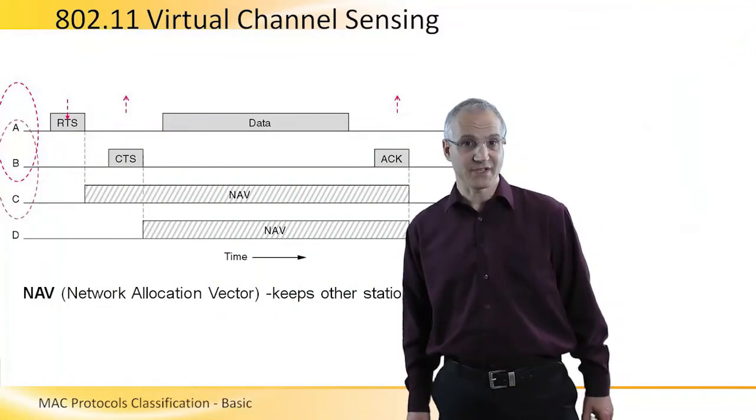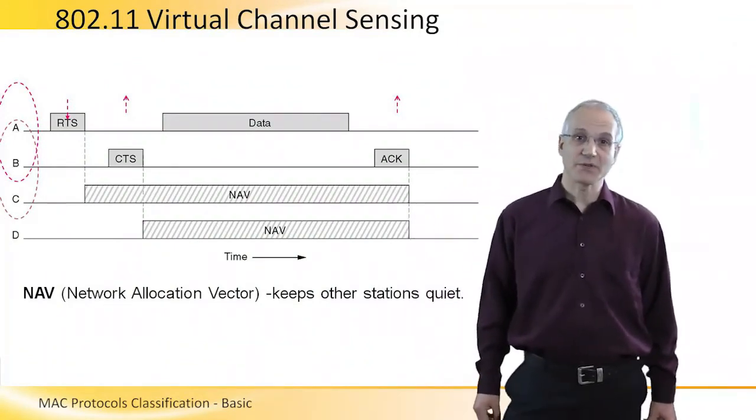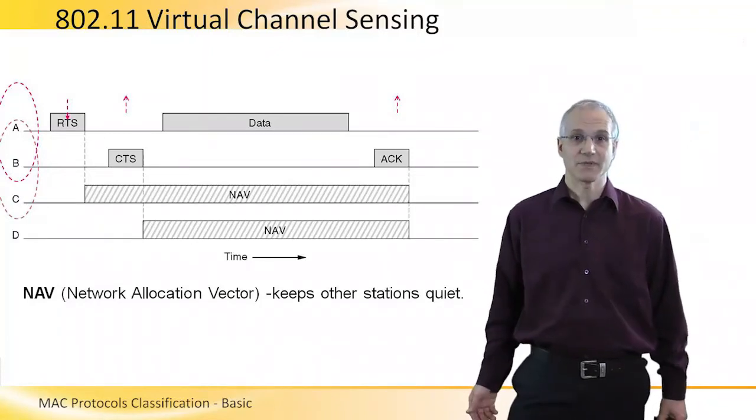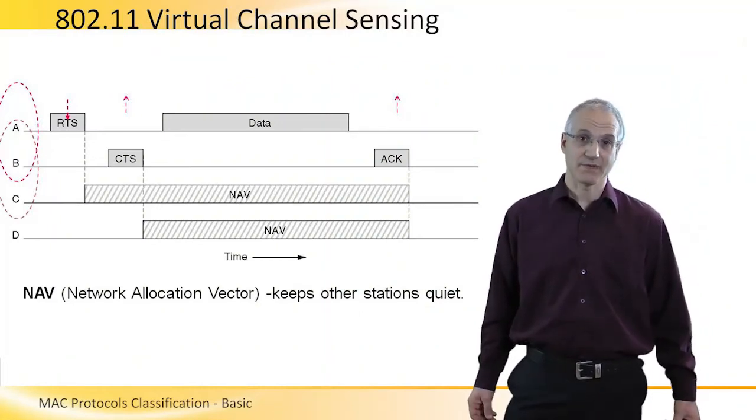B, the destination hears the request to send and sends a clear to send signal, meaning, I don't hear any other transmission, you can please go ahead. Because we can have a situation where some hidden terminal say D is transmitting and A cannot listen to it, cannot hear it.